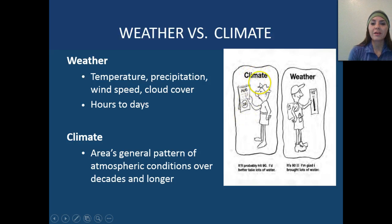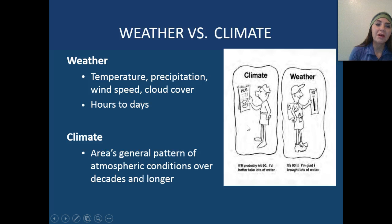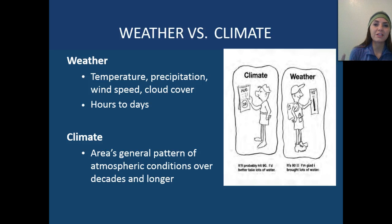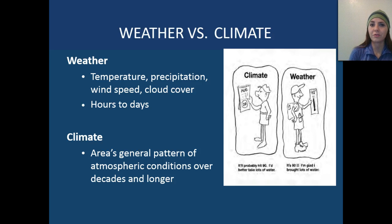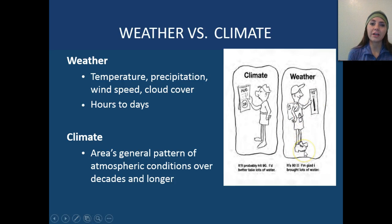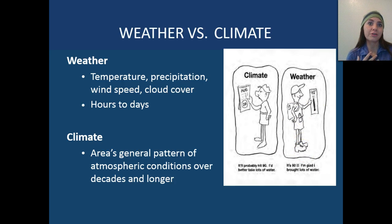Climate basically tells us that, for example, in August it might be around 23 degrees Celsius, or around 32 to 36 degrees Celsius if you live somewhere like Houston, Texas. Weather, on the other hand, you might look and it could be 90 degrees — or in our case, 110 degrees with the heat index.